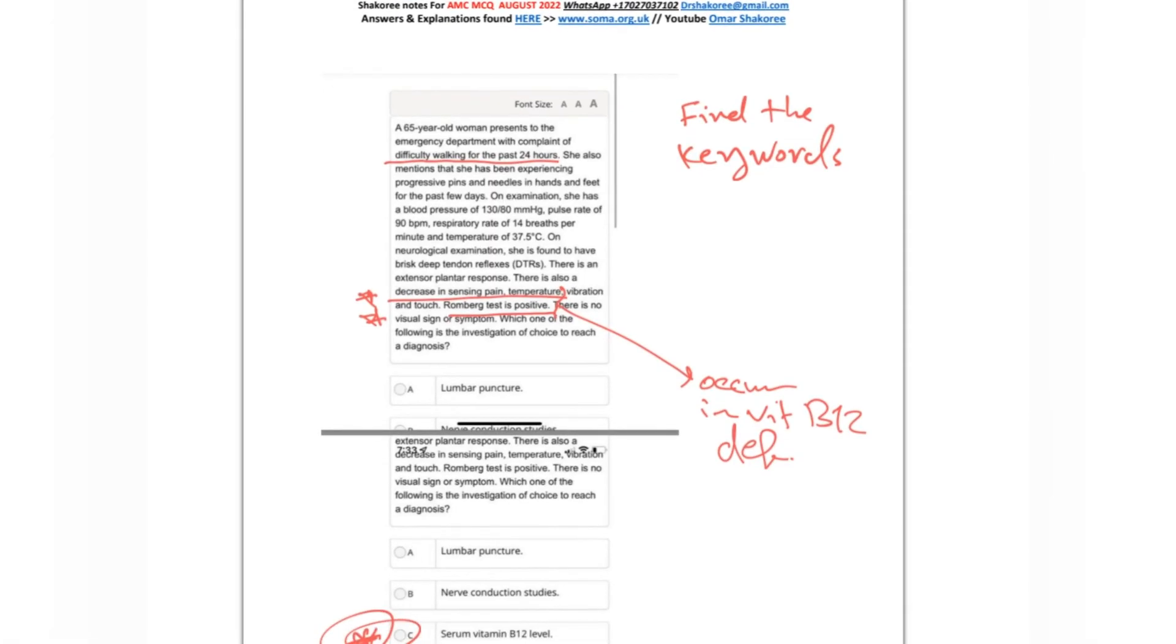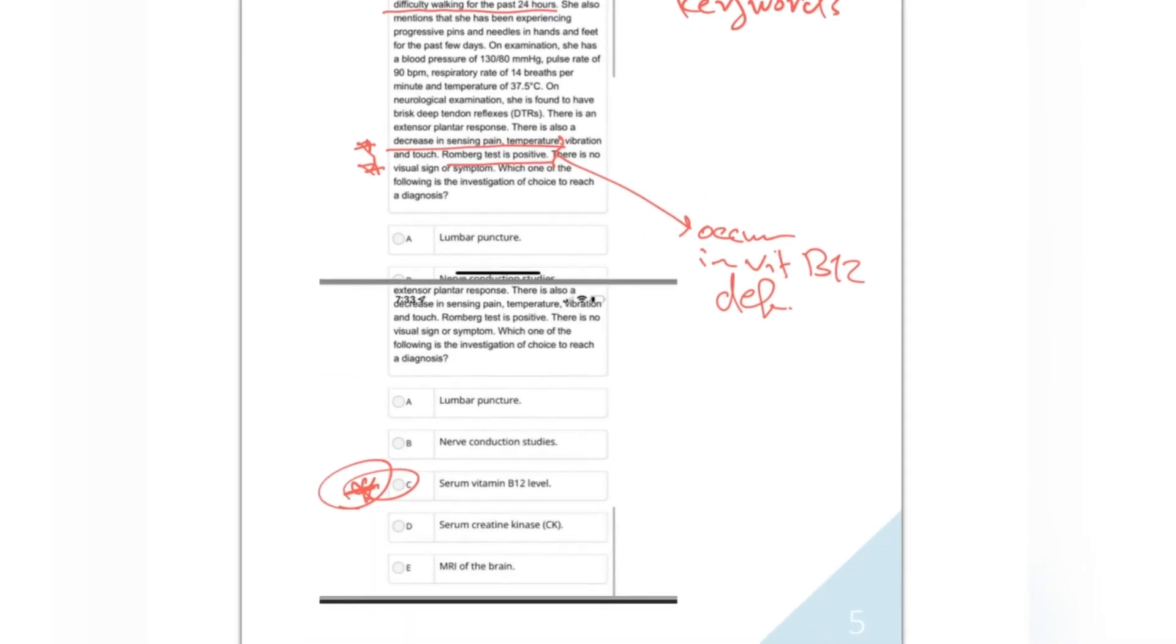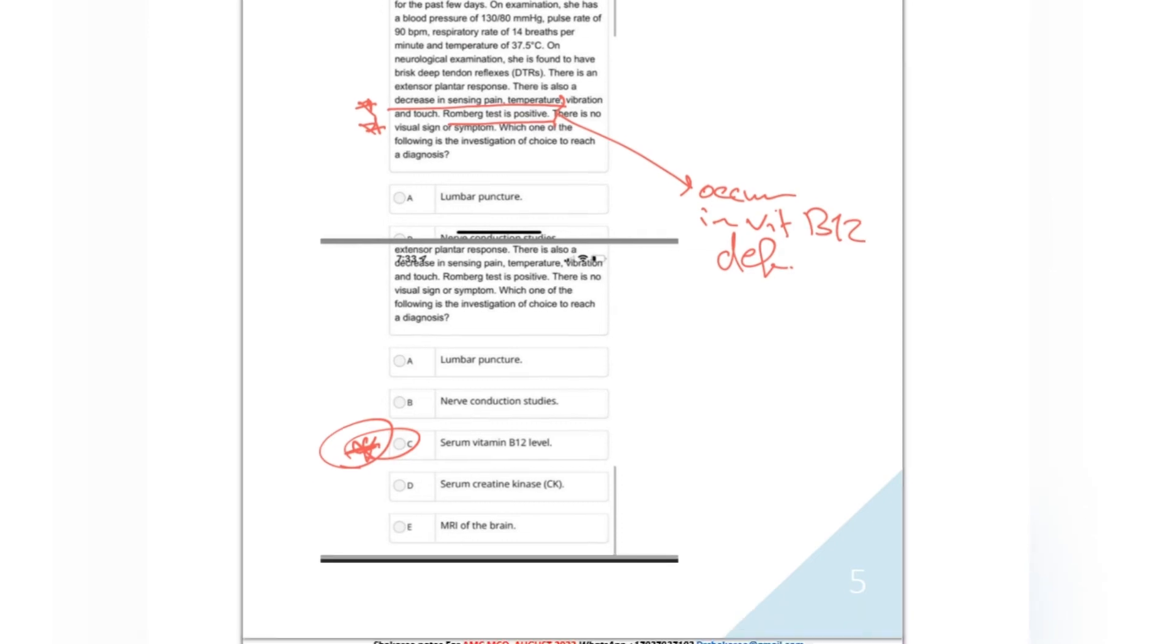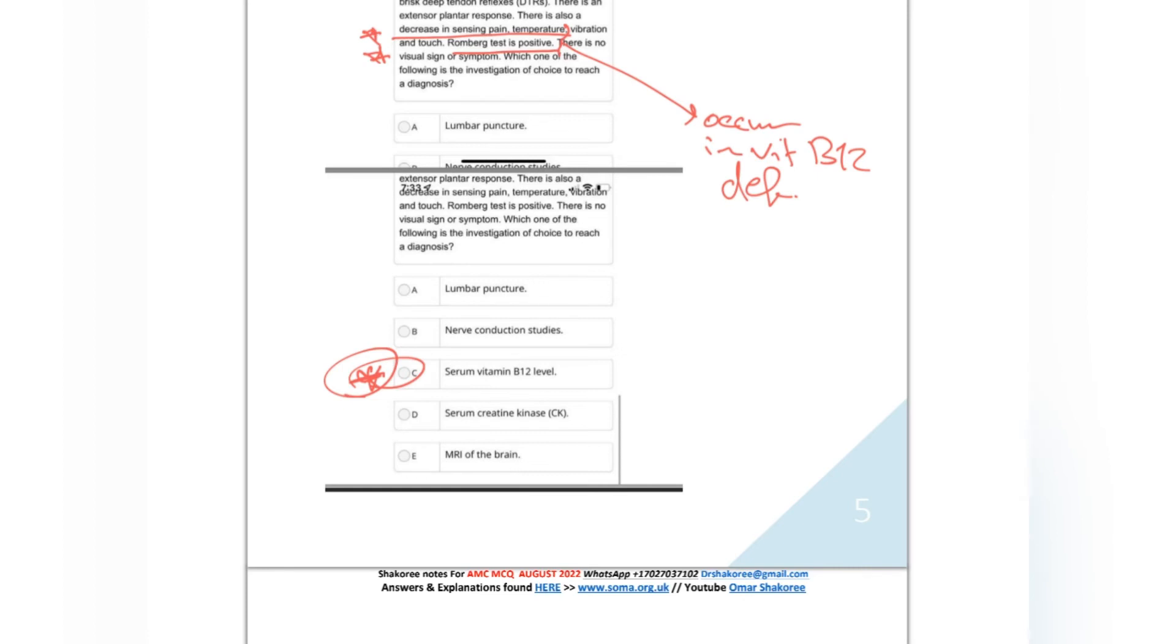Here we have a patient who is old with difficulty walking for 24 hours. He has decreased sensation of pain and temperature, and Romberg test is positive. Look, in our study for AMC, remember Romberg test positive occurs only in vitamin B12 deficiency. So find the keyword: if you find Romberg positive plus decreased sensation of pain and temperature, this occurs in vitamin B12 deficiency. So what to do next regarding diagnosis? Of course, serum B12 level.